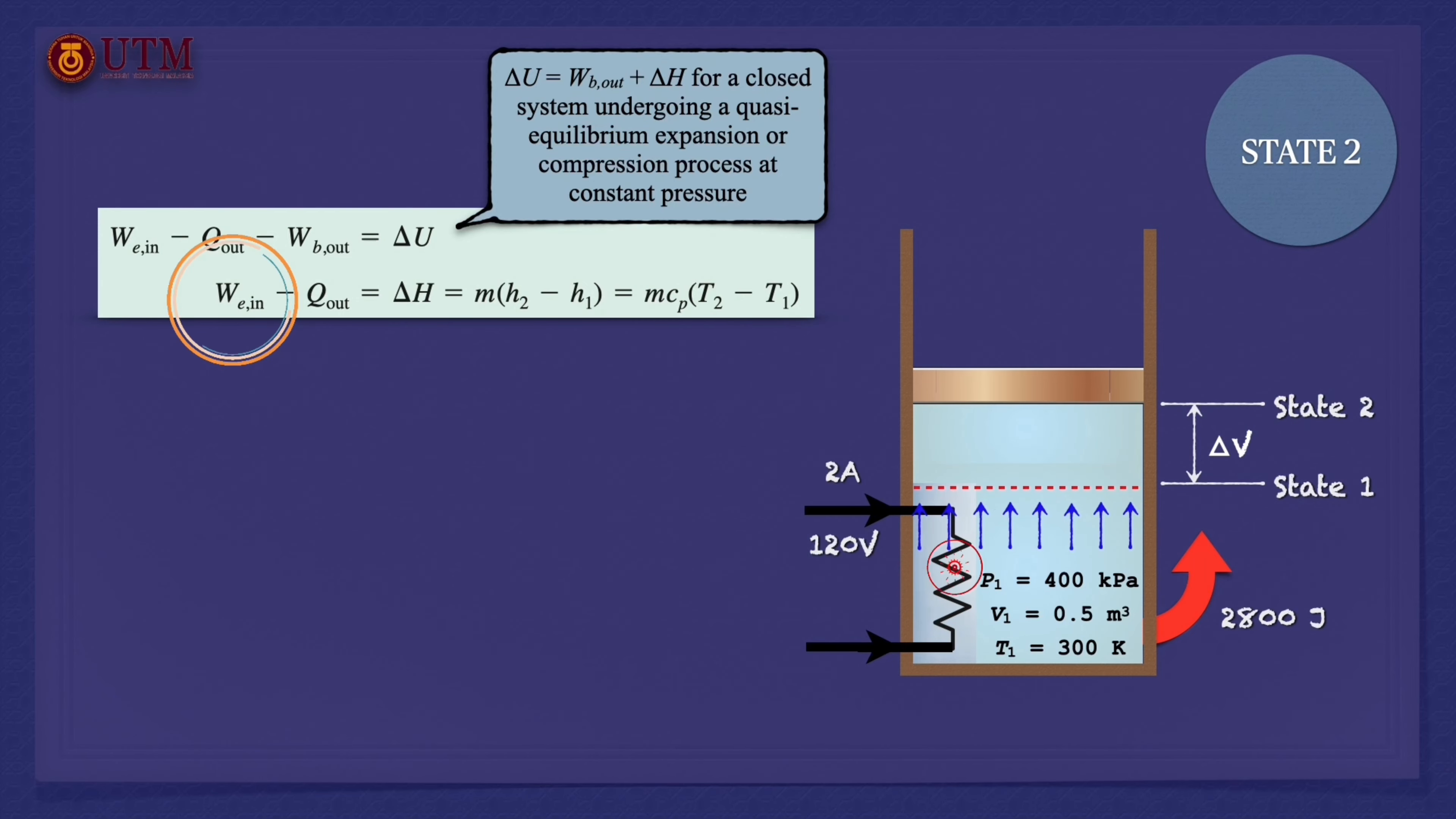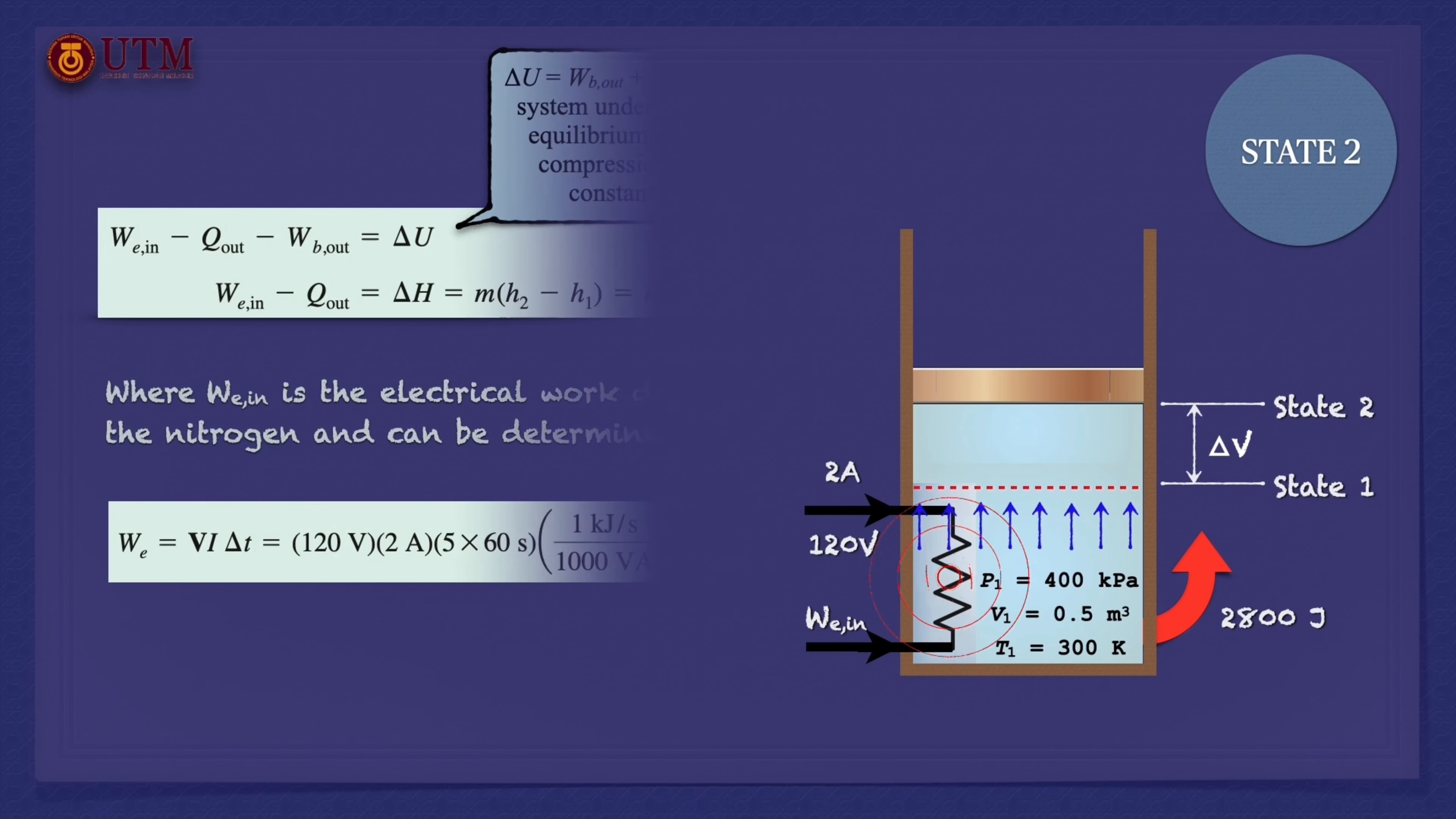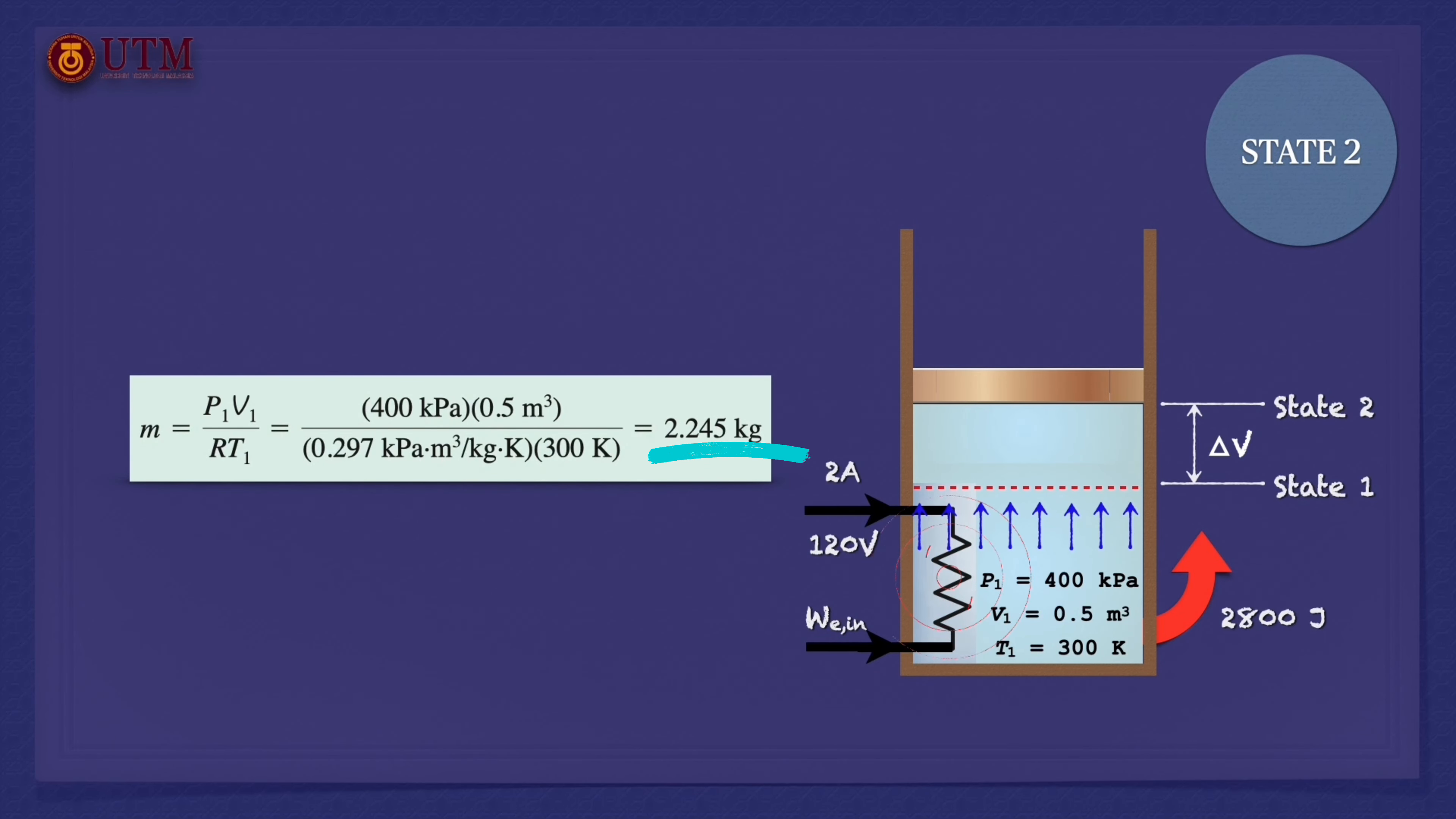W in is the electrical work done on the nitrogen and can be determined as follows. And M equals the mass of nitrogen. It is determined from the ideal gas relation.